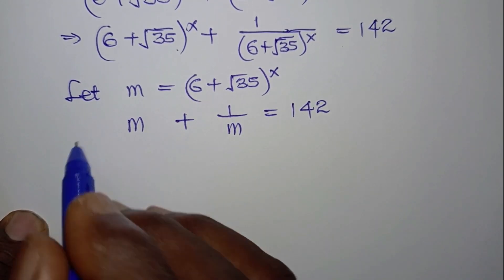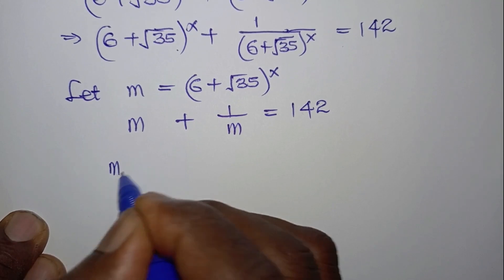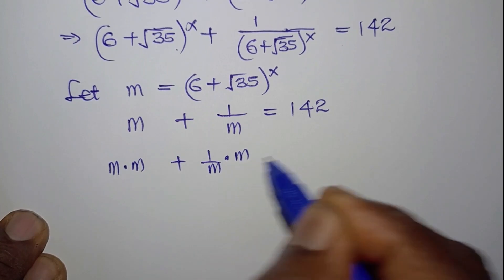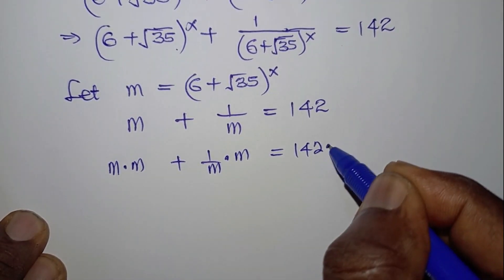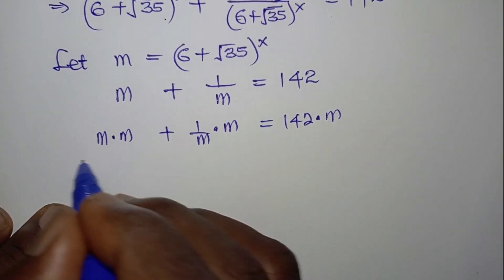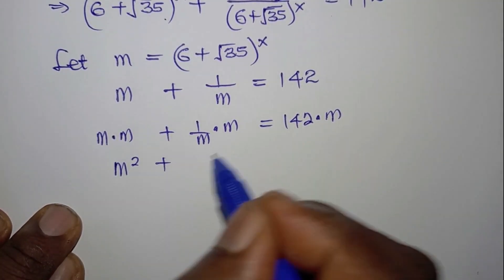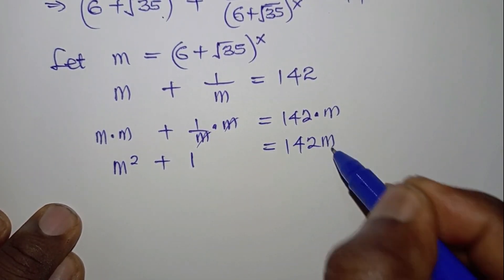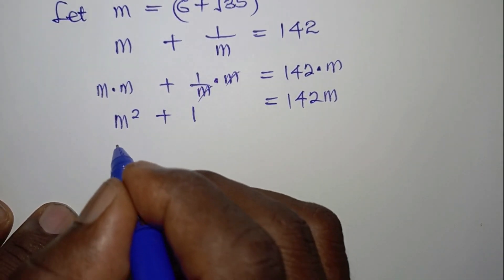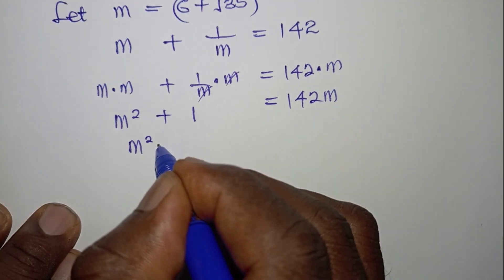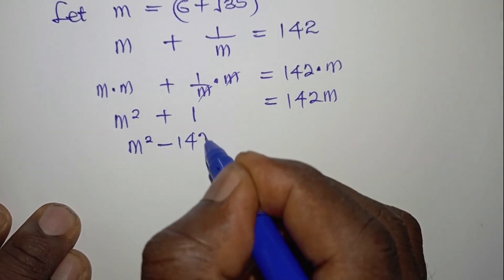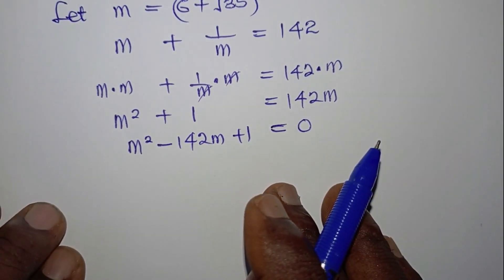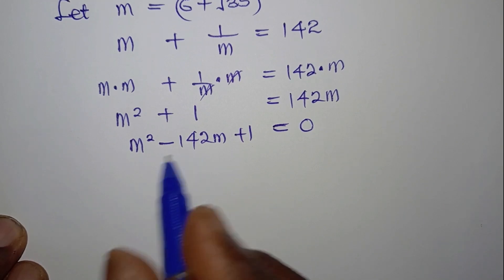Multiplying both sides by m gives us m² + 1 = 142m. Rearranging, we get the quadratic equation m² - 142m + 1 = 0.